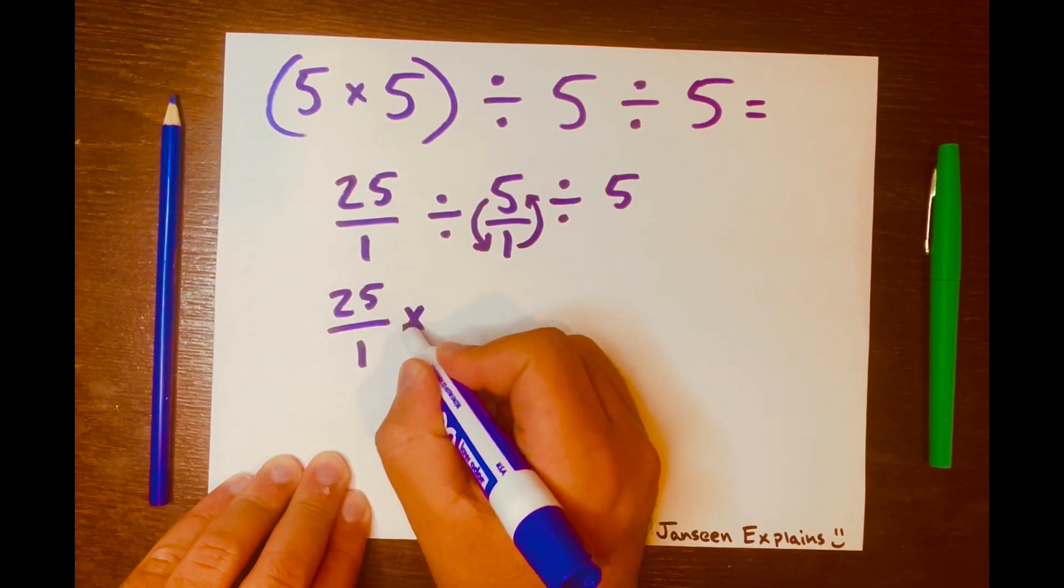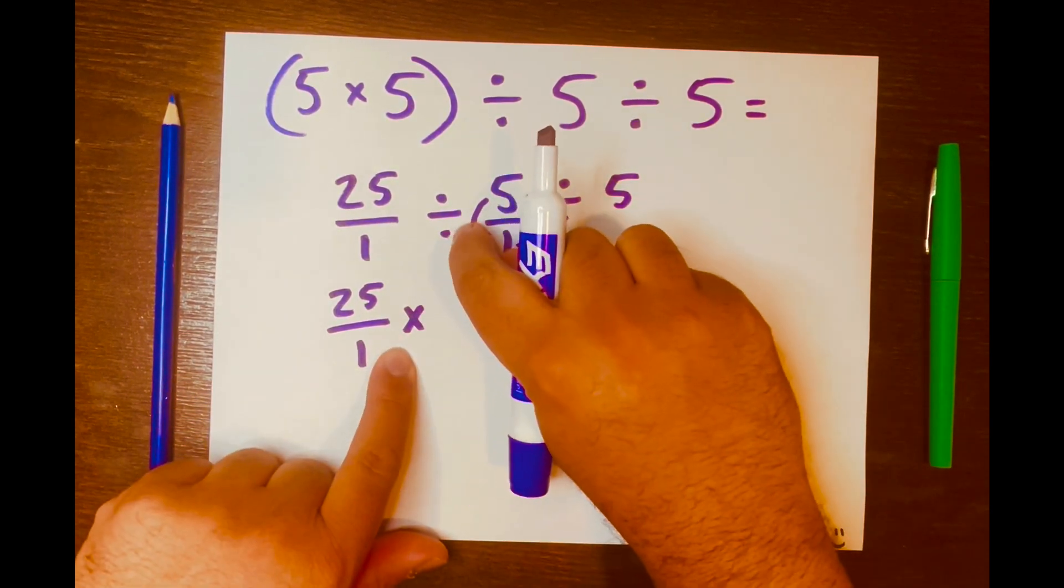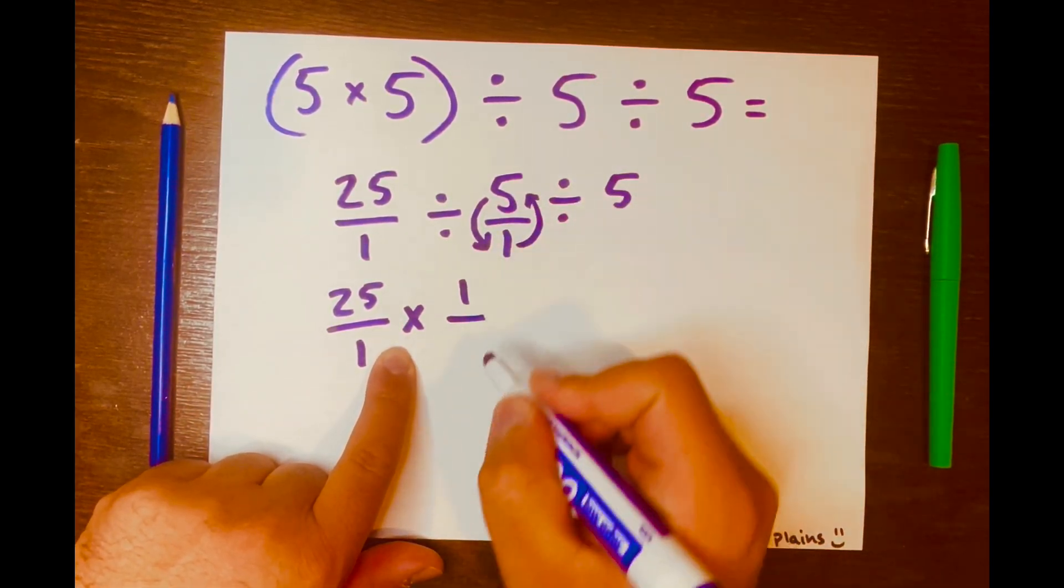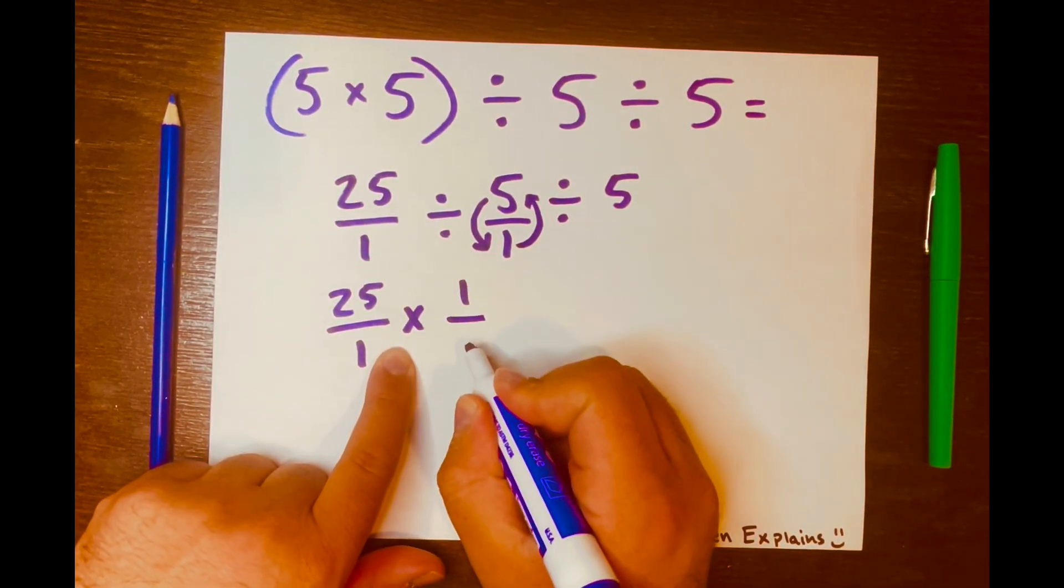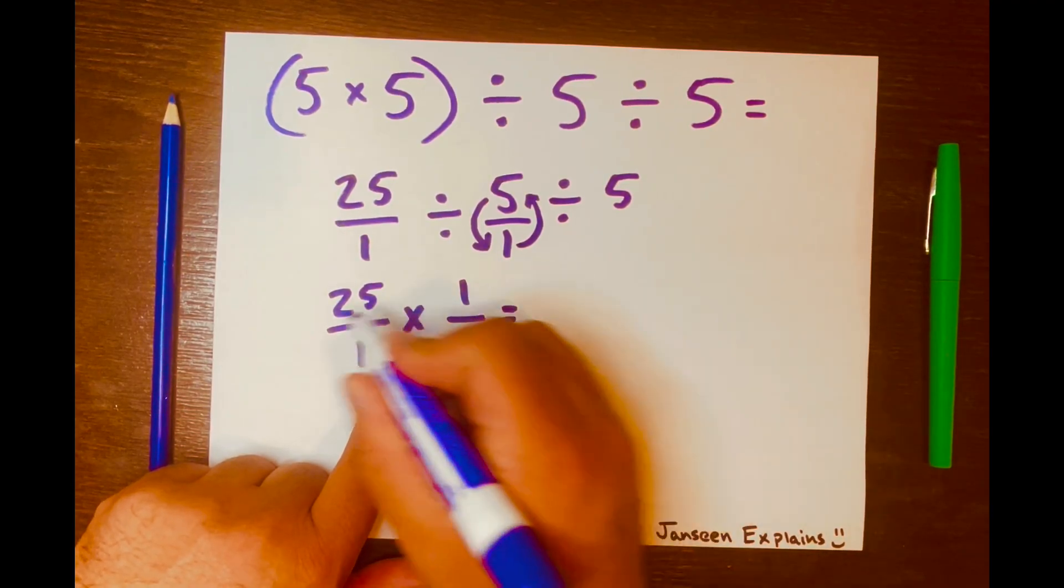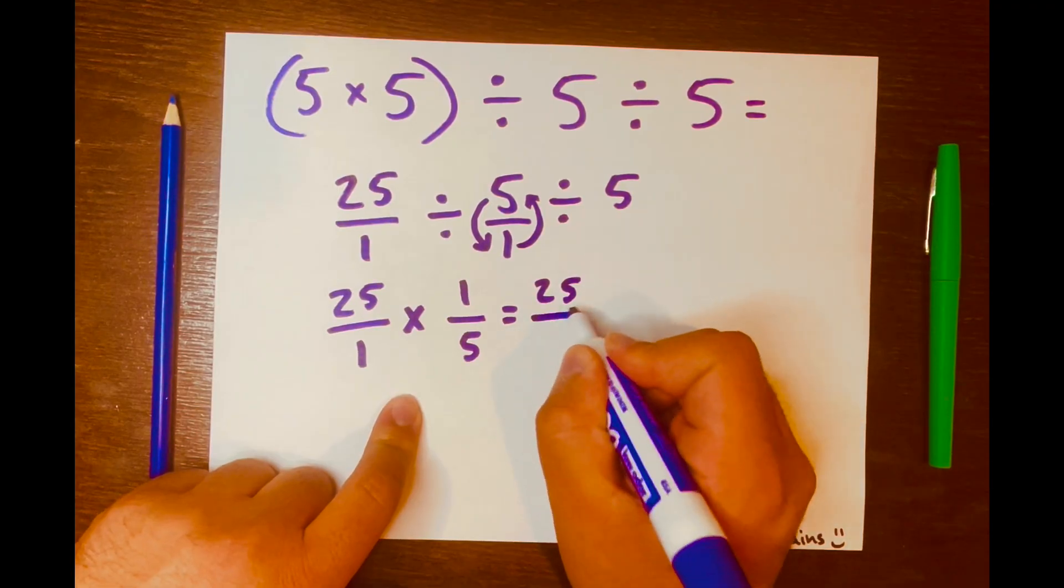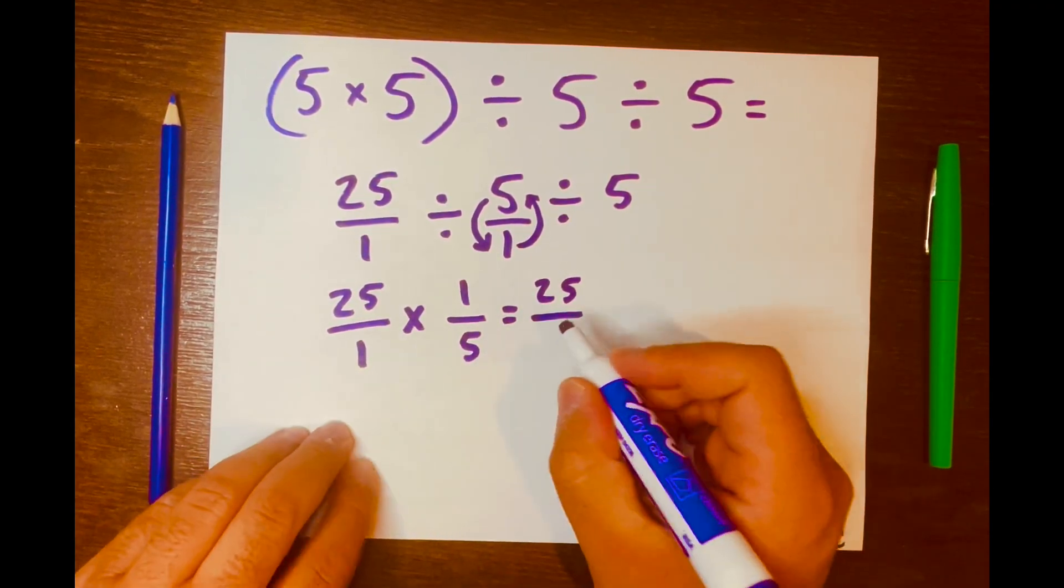So it'll be written like this: 25 over 1 times, because we change the division symbol to multiplication, and then we flip the fraction so it'll be written 1 over 5. And then you multiply across, so 25 times 1 is 25 and then 1 times 5 is 5.